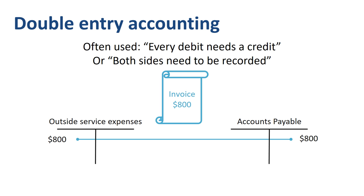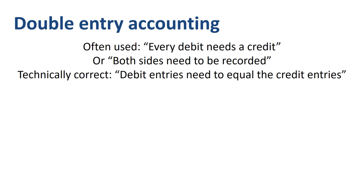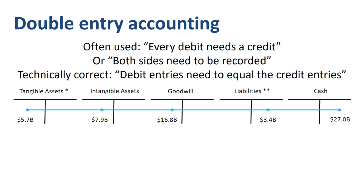Technically speaking, the sum of the debit entries needs to equal the sum of the credit entries — this would be a better way of describing double entry accounting.